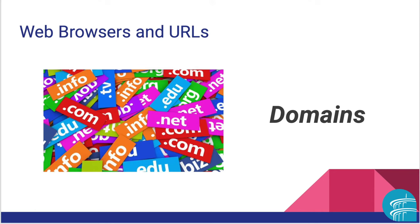Some of the common domains are .com, which is mostly used for commercial companies and businesses; .edu, which is used for educational institutions; .gov, which is for government agencies; .info, which is for informational sites; .net, which is usually tied to an internet service provider like Comcast and AT&T; and .org, which is mostly used for non-profits.